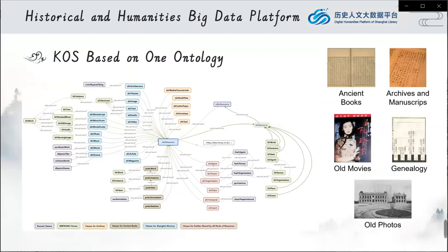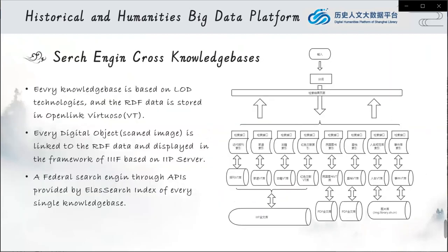The knowledge organization system based on one ontology integrates all data about different kinds of resources together, such as ancient books, archives and manuscripts, old movies, genealogy, and old photos, and so on. We designed a federated search through APIs provided by the last search index of every single knowledge base.